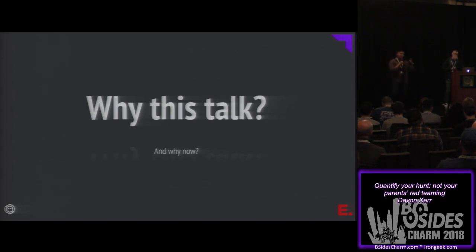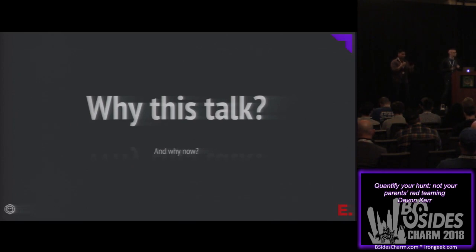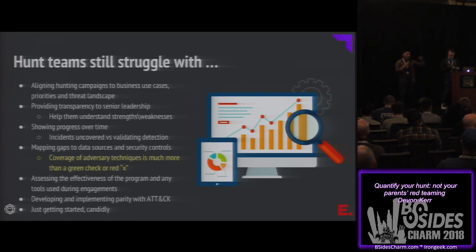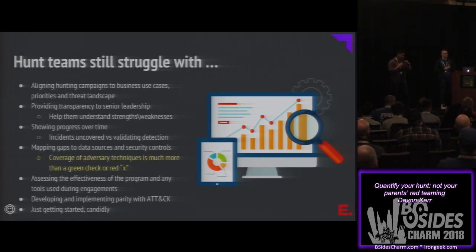So why this talk? I've seen people talking about quantifying your hunt, which is great. Today's keynote aligns perfectly with what we're trying to do here: we have to understand exactly what we have and assess what we can utilize to go against different techniques. What I'm still seeing hunt teams struggle with is providing a transparent way to show weaknesses and strengths. A lot of people just do a check and say 'yes, I can detect this' — green — or 'I cannot detect this' — red. That's not the right approach, because you have to back up and support that scoring.